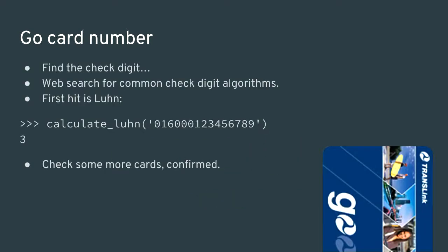I compared the MIFARE serial number with the number printed on the card. I observed that all cards started with 016 and guessed the last digit was probably a checksum. The Go card number is just the MIFARE serial number in little-endian. I later figured out the check digit — I did a web search for common check digit algorithms and the first hit was the Luhn checksum, originally conceived in 1954, and it turned out to be exactly that.